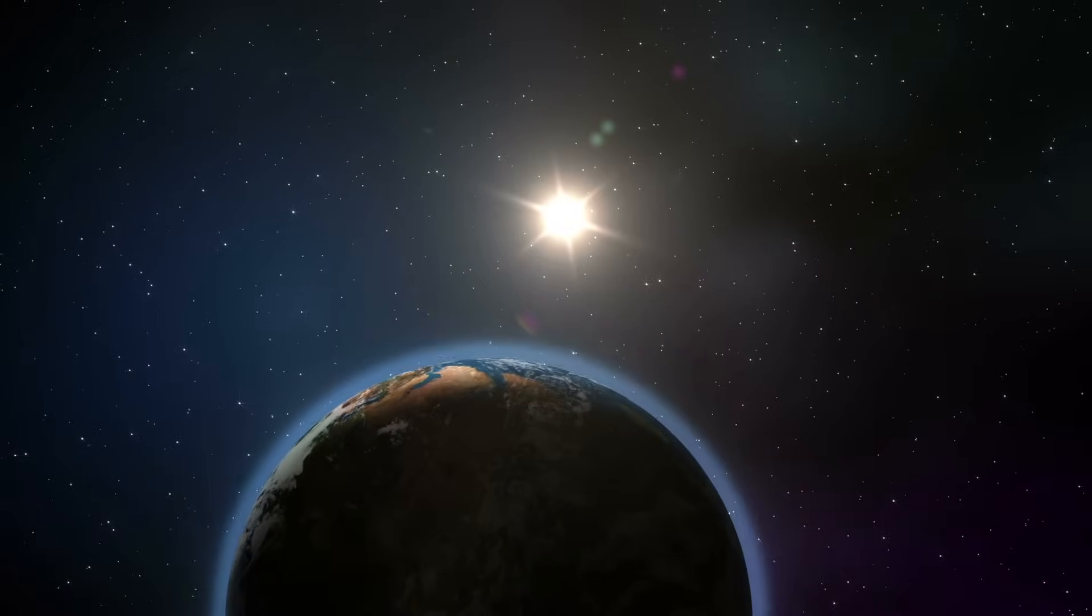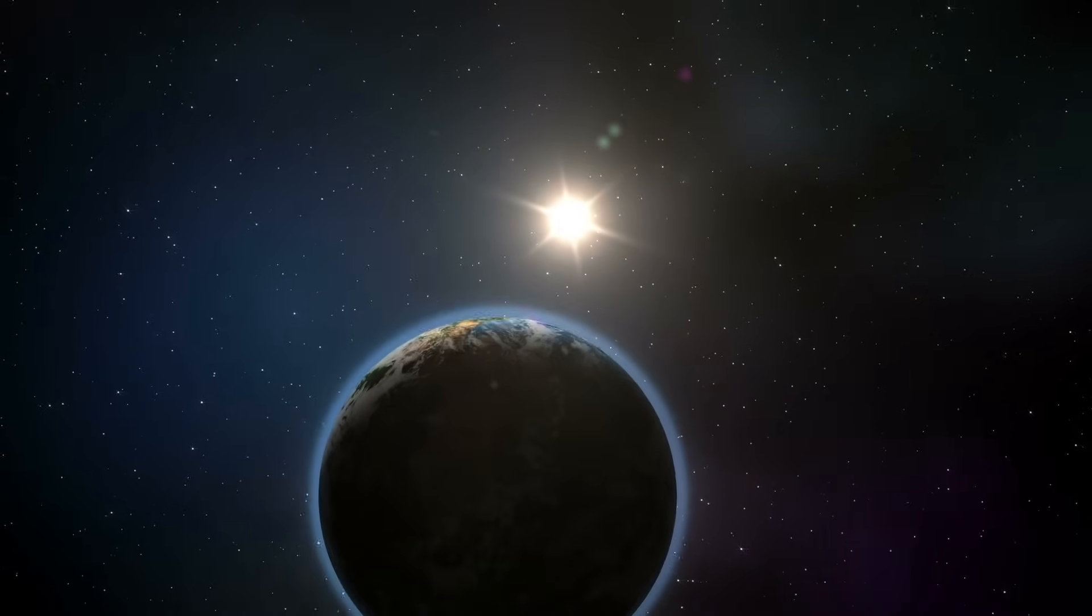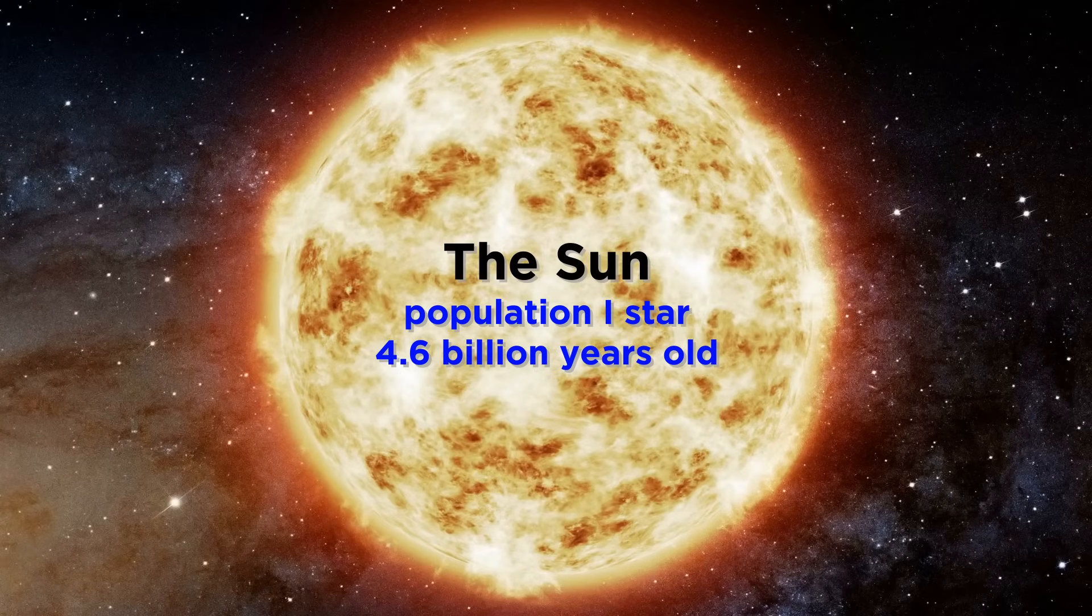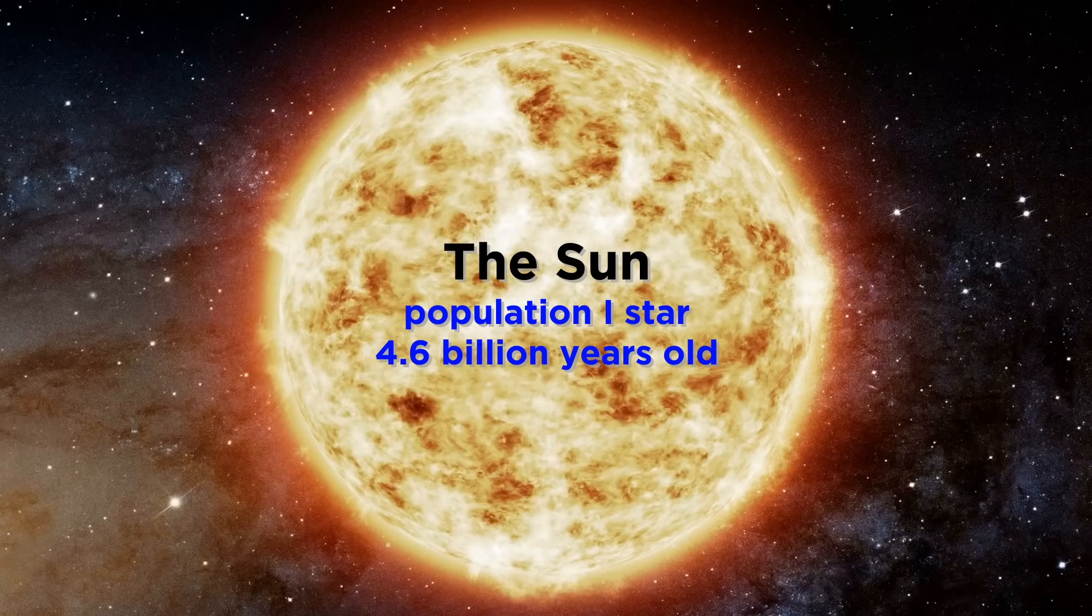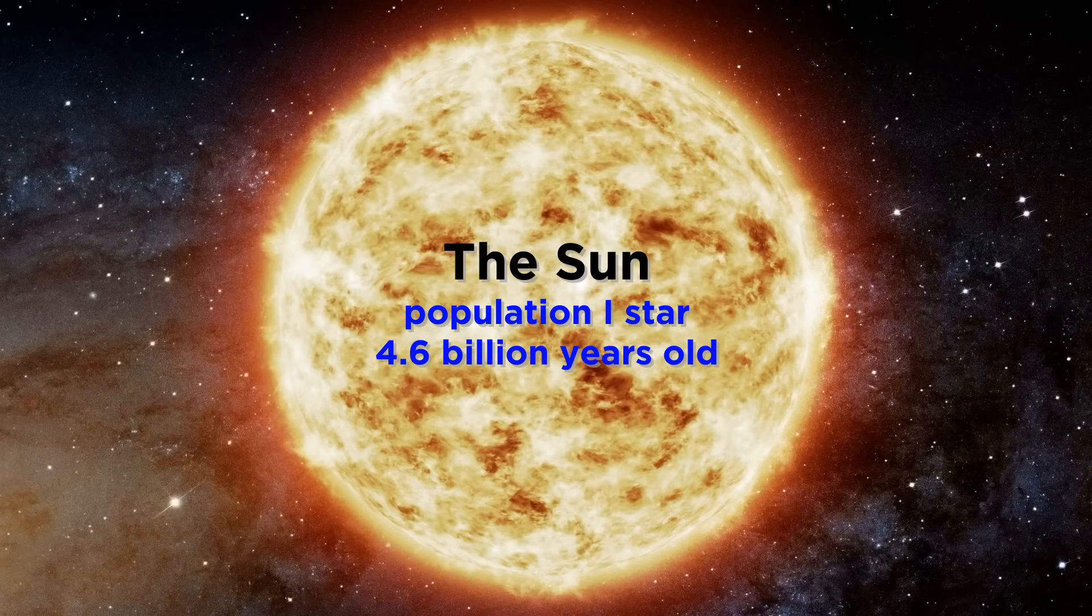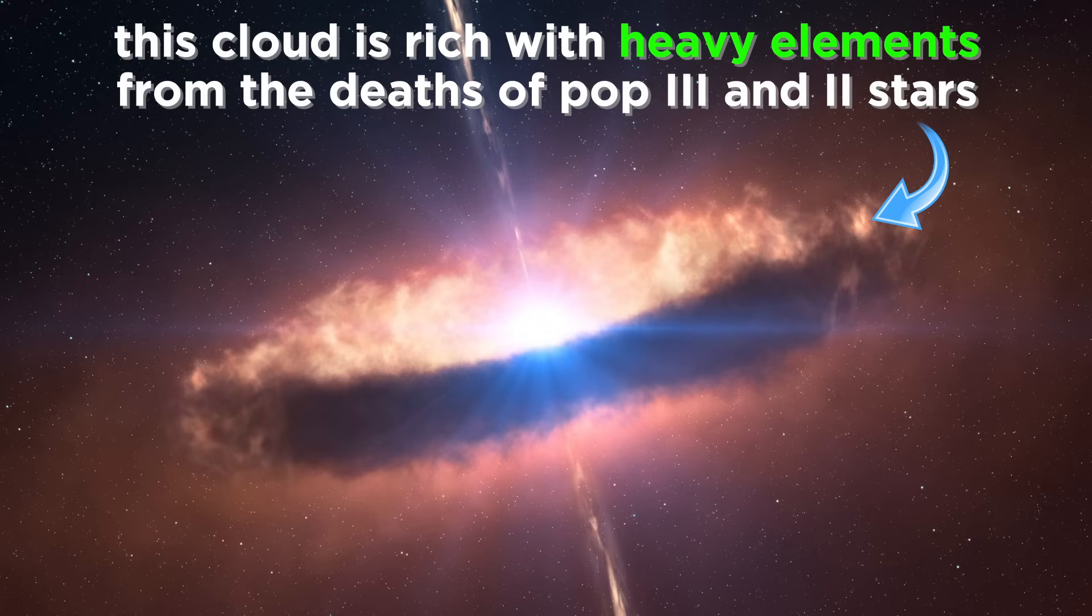We live on a planet that orbits this star, and we call it the sun. The sun, which is a Population 1 star, formed around 4.6 billion years ago from a cloud of gas and dust, which was rich in heavy elements that were introduced to interstellar space when older Population 3 and 2 stars spewed out their contents during supernovas.